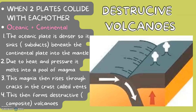Destructive volcanoes are formed where two plates collide with each other. This has to be oceanic and continental, since if it was continental and continental, fold mountains would be made. The oceanic plate is denser, so it sinks or subducts beneath the continental plate into the mantle. Due to the heat and pressure, it melts into a pool of magma. This magma then rises back up through cracks in the crust called vents, forming destructive or composite volcanoes.